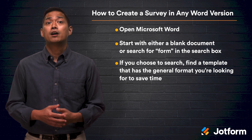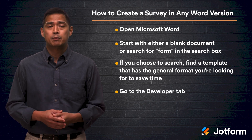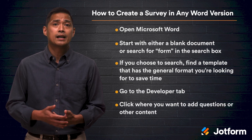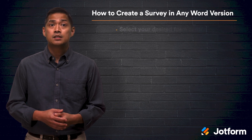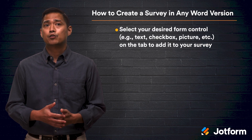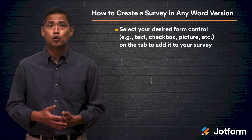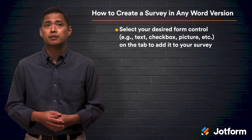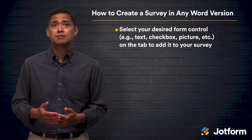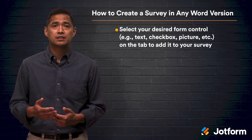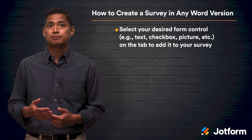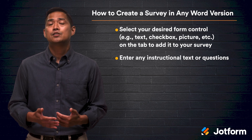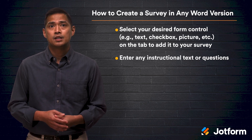Next, click on the Developer tab. Click where you want to add questions or other content. Select your desired form control on the tab to add it to your survey — for example, text, checkbox, picture, etc. Then enter any instructional text or questions.